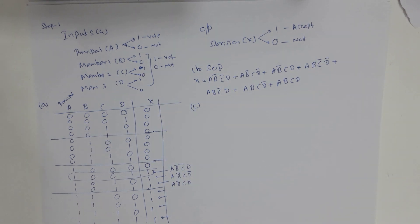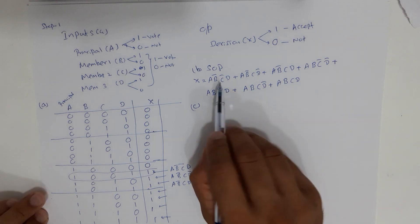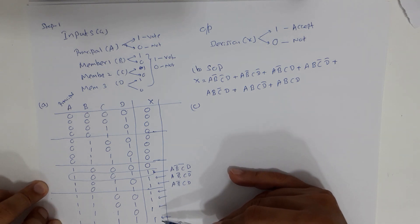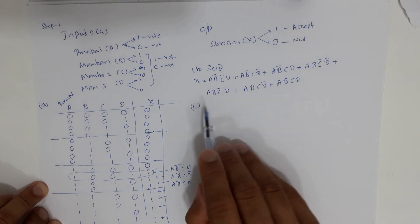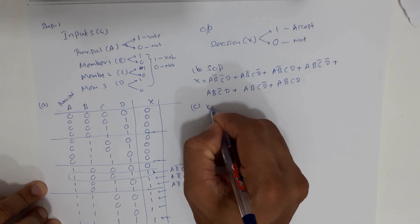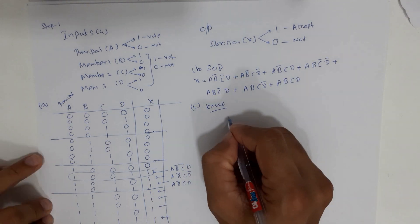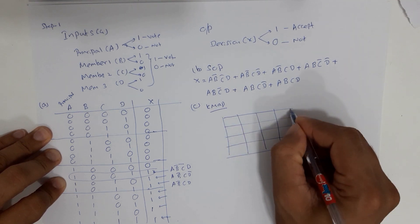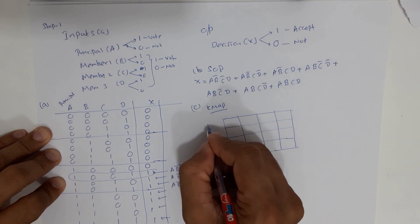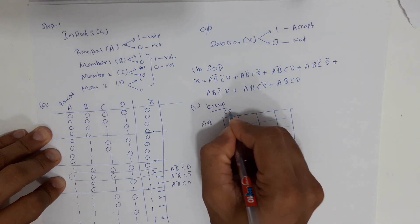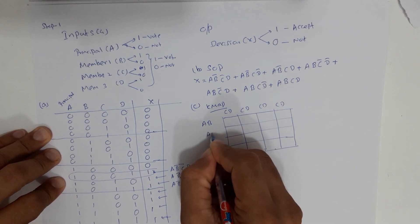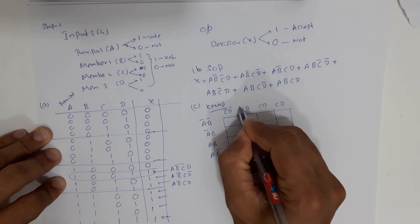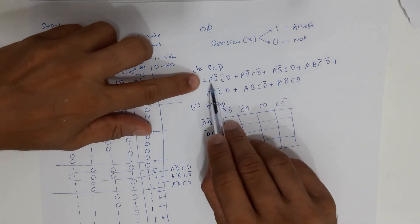That completes Part B. Part C says to simplify the SOP expression obtained in Part B. We have a lengthy expression with seven product terms. Rather than using Boolean algebra equations, the K-map method is easier. We'll use a K-map with 16 cells — four rows and four columns. We use A and B for the rows and C and D for the columns, arranged in Gray code order.